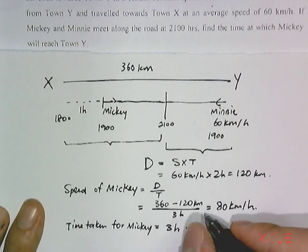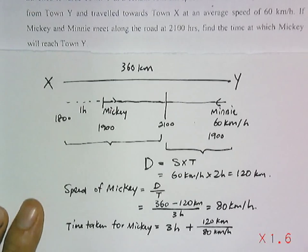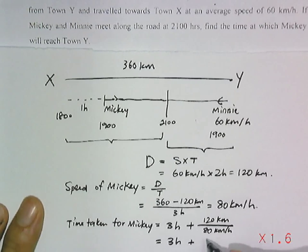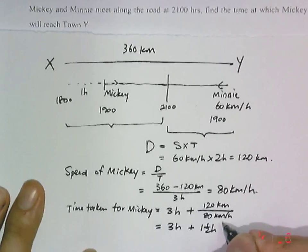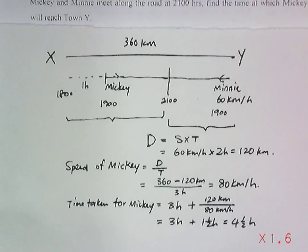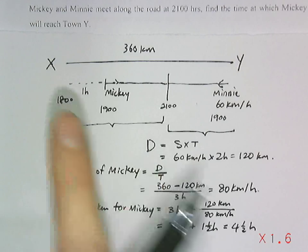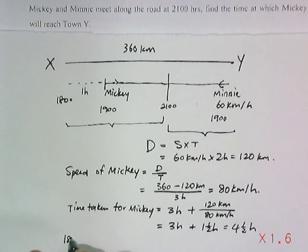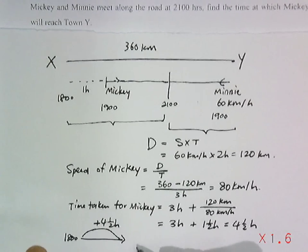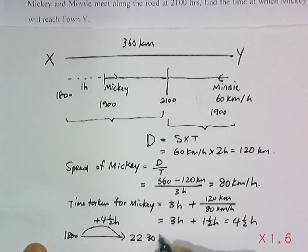That gives us a total of four and a half hours, because this is one and a half hour. Four and a half hours from the starting. So, 1800 hours plus four and a half. This gives us 2230 hours.